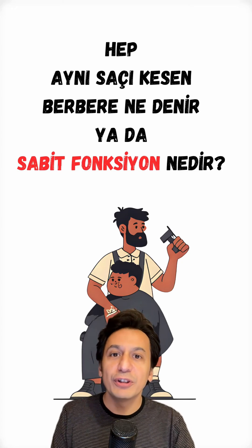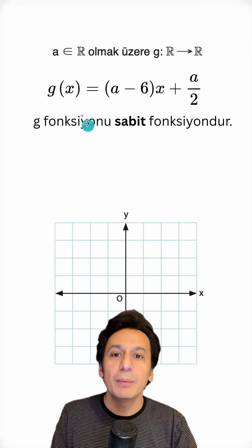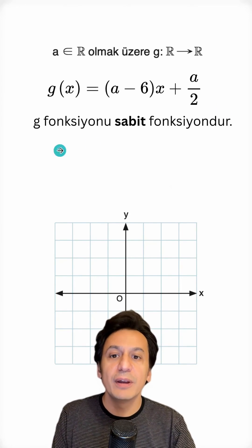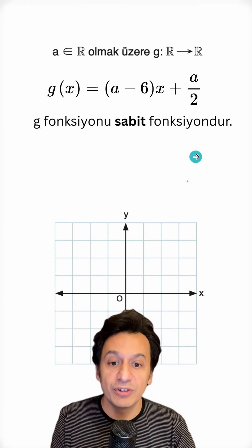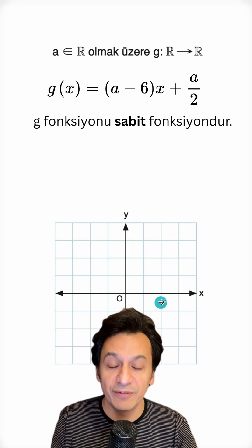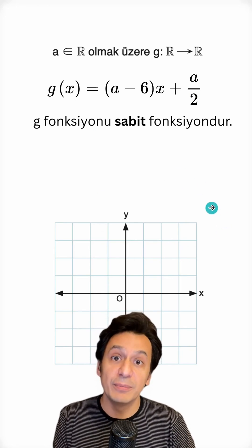Let's examine what a constant function is through a simple example. We are given a function and told that this function is a constant function. We are asked to draw its graph. To solve this question, we need some preliminary information.